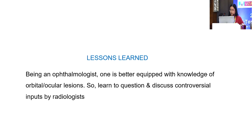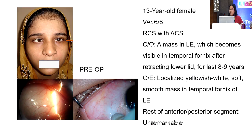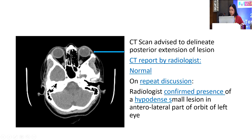Case number four: a 13-year-old female who came with a soft, localized yellowish-white mass in the left temporal fornix. She would frequently invert her lower eyelid in front of the mirror and was bothered and wanted it removed. To find out the extent and whether there was orbital involvement, we sent her for a CT scan. The radiologist said it was all normal.